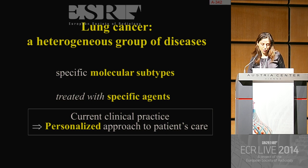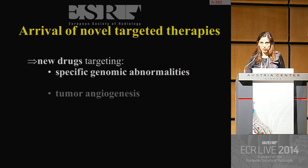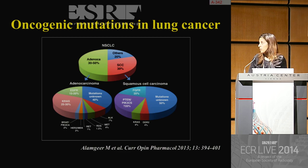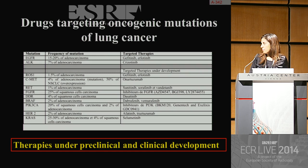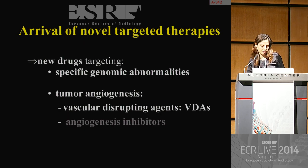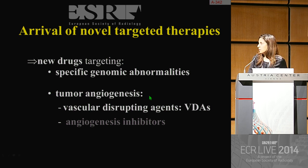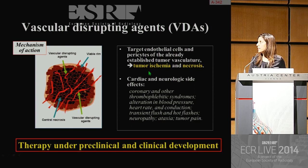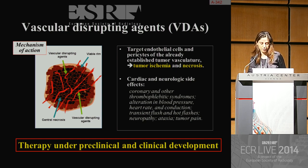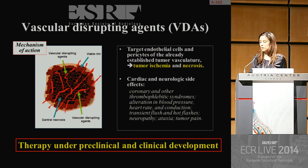Current clinical practice is being translated into the concept of personalized approach to patient's care. We should become familiar with new drugs targeting specific genomic abnormalities, which are frequently observed in lung cancer, with a wide variety of therapies under preclinical and clinical development. But there are also new drugs targeting tumor angiogenesis. The first approach is the vascular disrupting approach, using agents targeting the already established tumor vasculature, resulting in tumor ischemia and necrosis with cardiac and neurologic side effects. Therefore, this therapy is still under preclinical and clinical development.